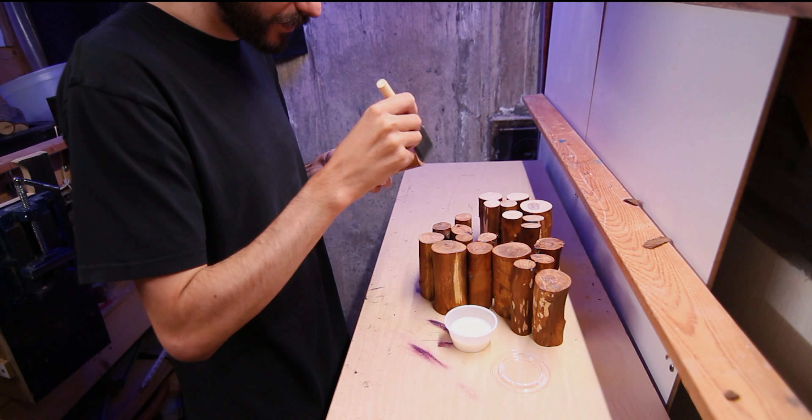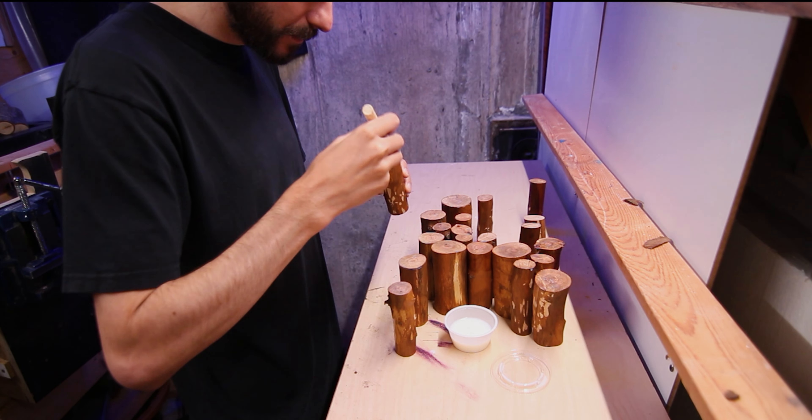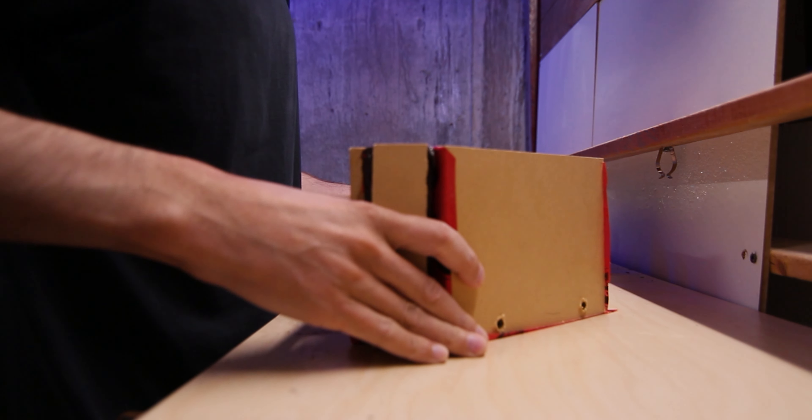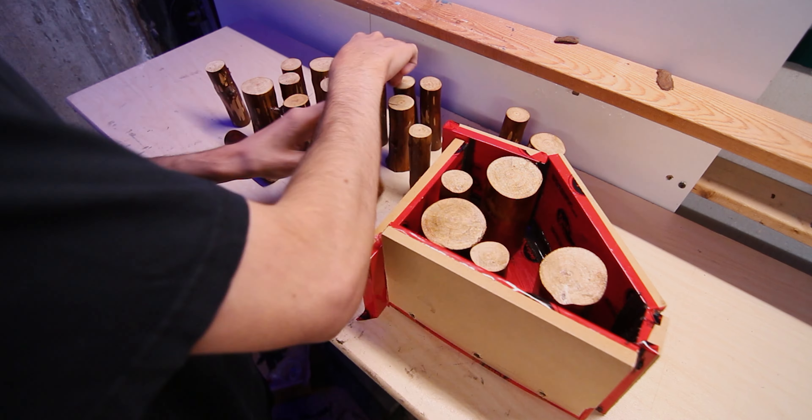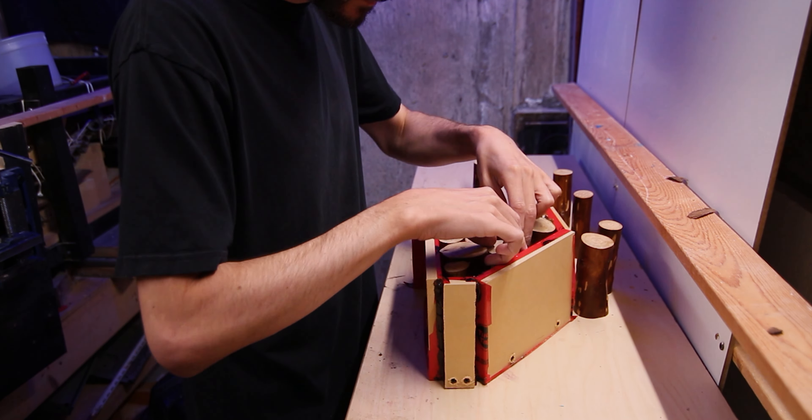Once I had all the bark removed, I decided I was going to seal the ends. This is because I'm going to use a pigmented resin and I don't want the pigment from the resin to seep into the end grain. To seal the ends, I'm just going to use a little bit of polycrylic and use a sponge brush to apply it.